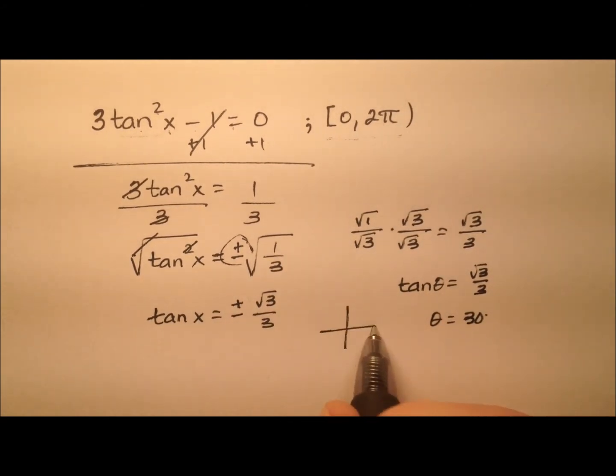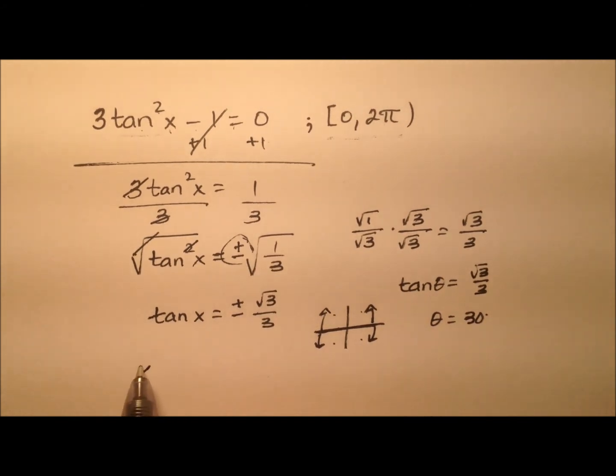All right. So that means when we're looking at our quadrants here, it's going to be every single quadrant because tangent is positive in the first and third, and it's negative in the second and fourth. So it's every quadrant. So from the x-axis, we'll be going up 30 here and here and then down 30 here and here. So how can we measure all those?